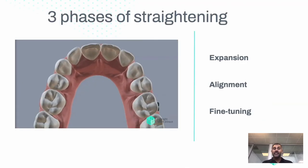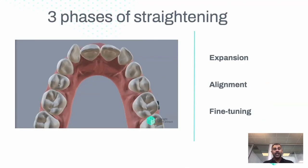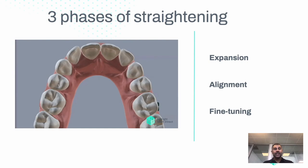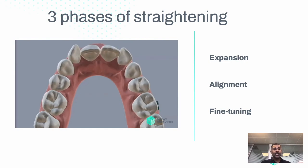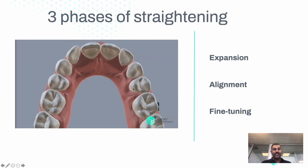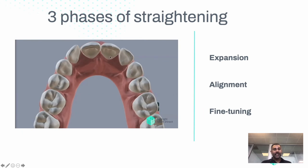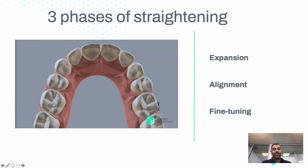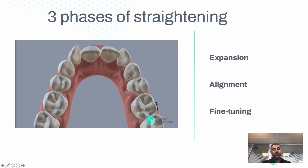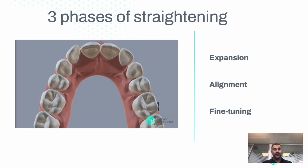There are three phases of straightening: expansion, alignment, and fine-tuning. In a simulation you would actually see expansion occurring, then alignment, and then fine-tuning at the end as well.